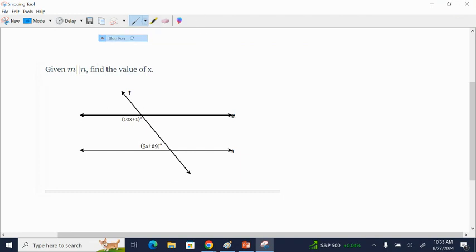So in this picture, I know that M and N are parallel. So my angle pair relationships all hold true. So next thing, identify what angle pair these are.